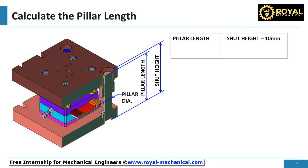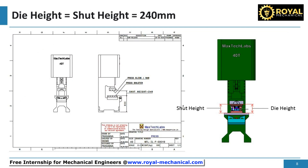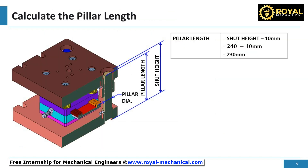Pillar length is equal to the shut height minus 10 millimeters. The shut height of the 40-ton press that we have selected for this design is 240 millimeters. So the pillar length is 240 millimeters minus 10 millimeters, which is equal to 230 millimeters.